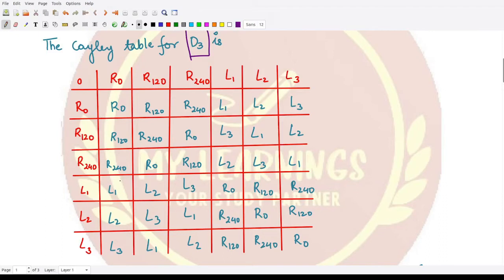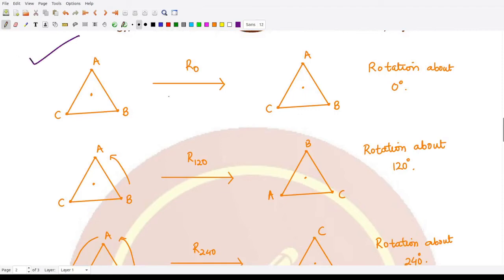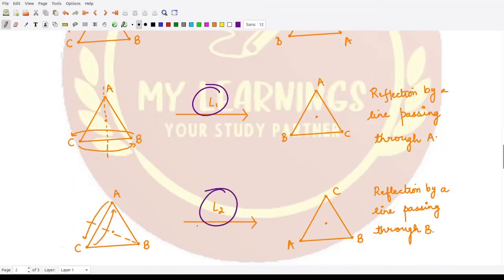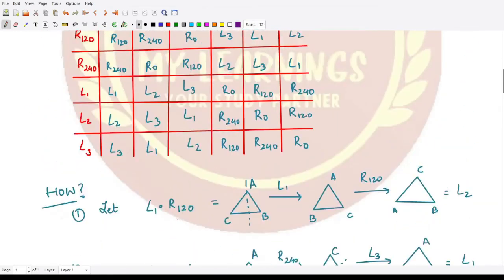We have already studied what R0, R120, R240, L1, L2, and L3 are. Now let's have a look at how we can create this Cayley table.